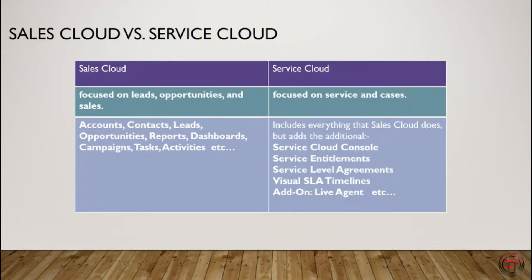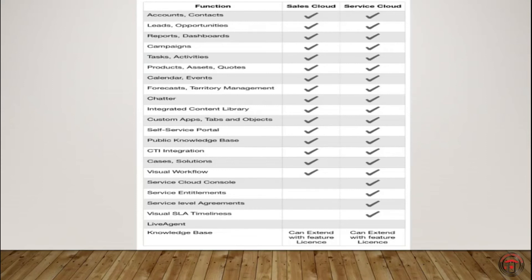Let's look at the key differences between Sales Cloud and Service Cloud. Sales Cloud mainly focuses on leads, opportunities, and sales, whereas Service Cloud mainly focuses on services and cases. All the objects that Sales Cloud has are also included in Service Cloud. In addition, Service Cloud has four more objects: Service Cloud Console, Service Entitlements, Service Level Agreements, and Visual SLA Timelines. We can also add add-ons like Live Agent. You can pause the video to take a closer look at the comparison table.